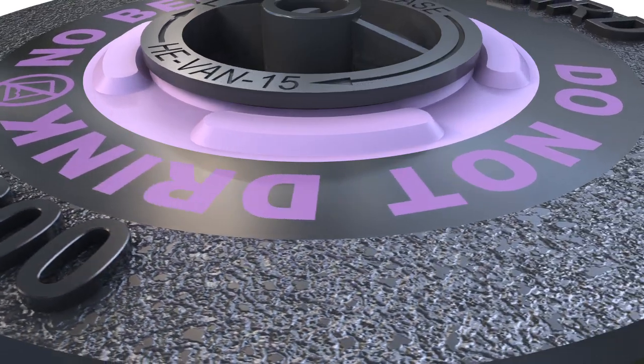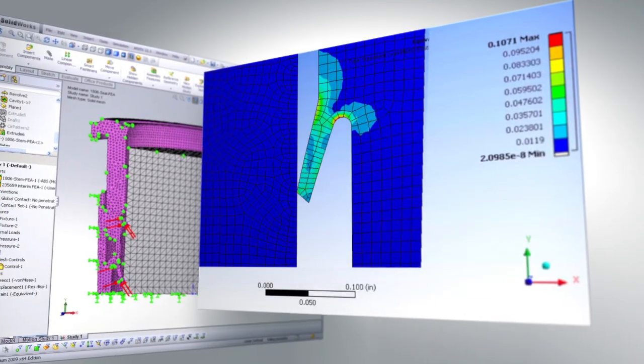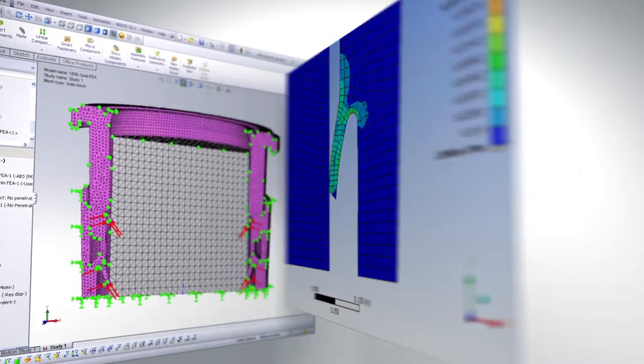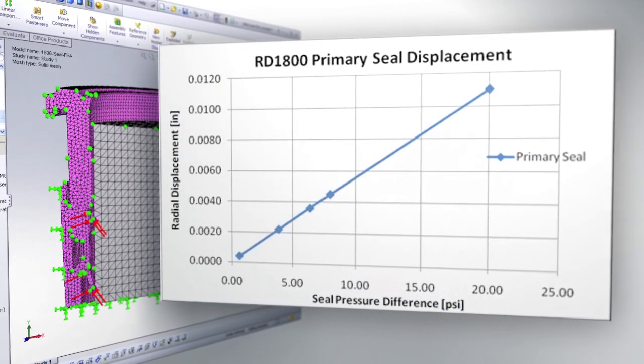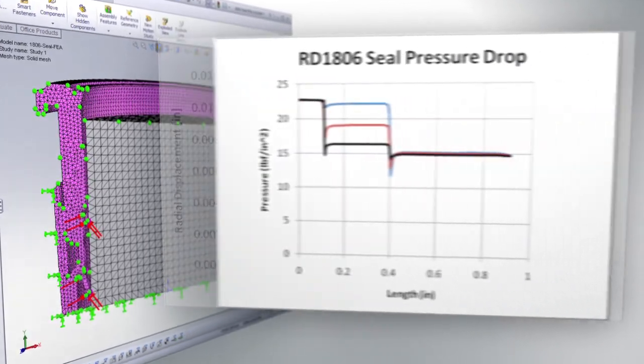But actions speak louder than words. Engineered using the most advanced modeling software, the RD-1800's impact-resistant cover and body stand up to vandalism, while also resisting damage in high-pressure applications.